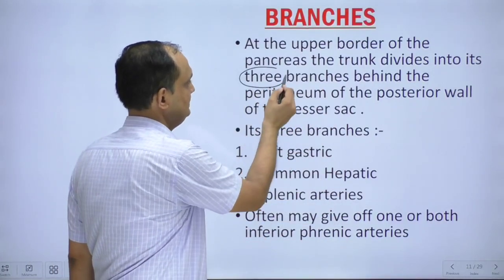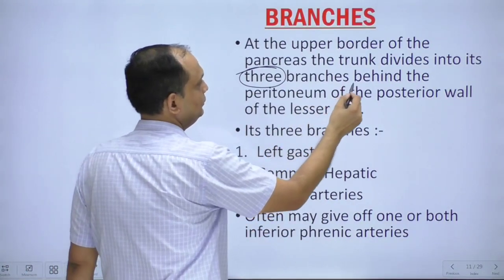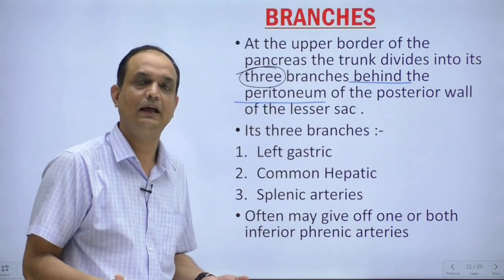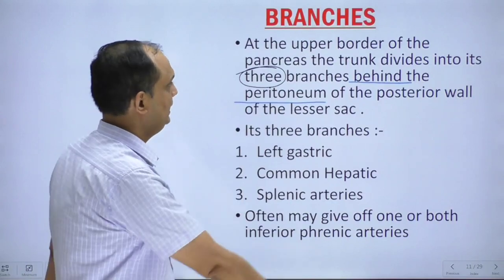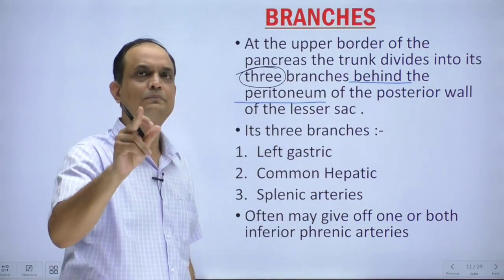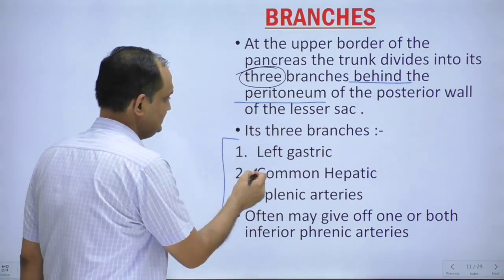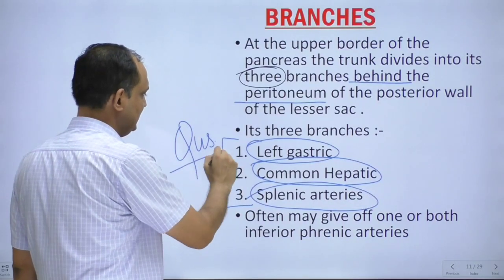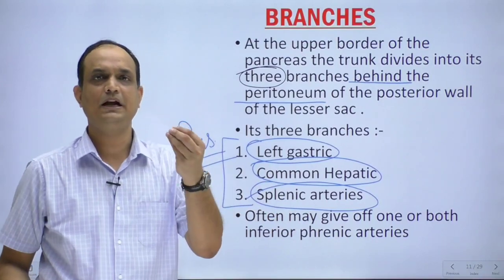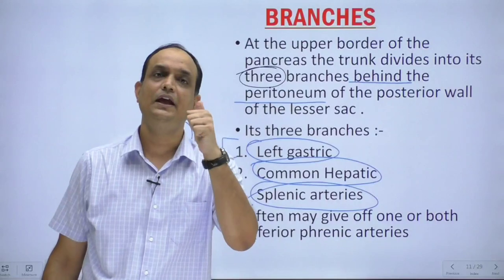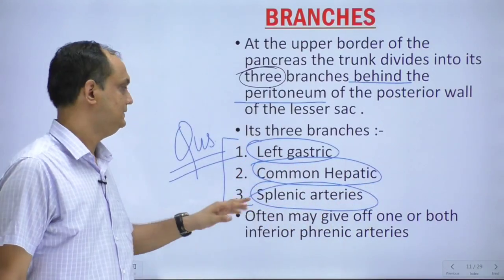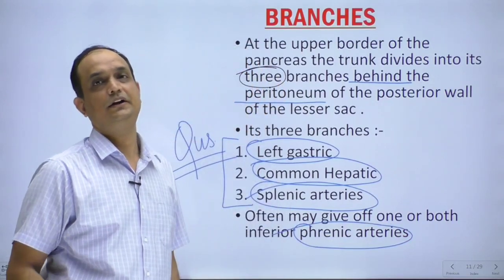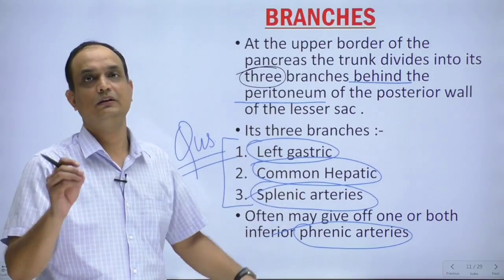At the upper border of the pancreas, the celiac trunk divides into three branches. These branches are also behind the peritoneum — specifically the posterior wall of the lesser sac. The three named branches of the celiac trunk are: (1) left gastric artery, (2) common hepatic artery, and (3) splenic artery. Sometimes the phrenic arteries may also arise from the celiac trunk.